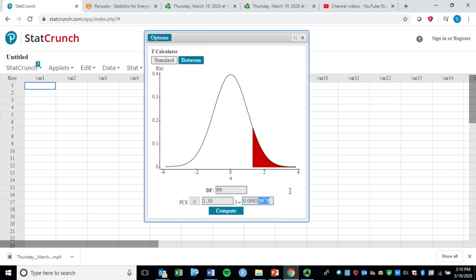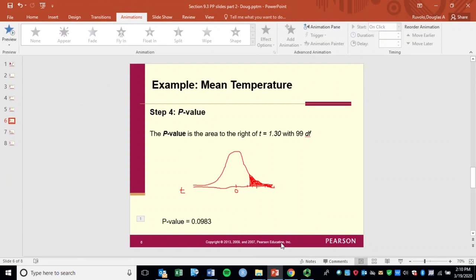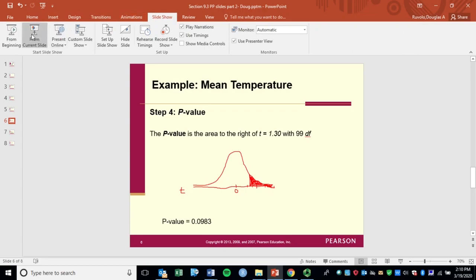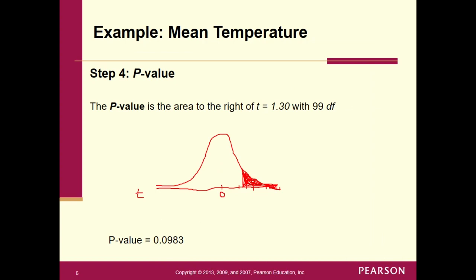Now, you don't have to take one minus anything. StatCrunch has already calculated it directly for you. You only have to do that with the tables, right? Tables don't know what you want. Well, StatCrunch does because you told it greater than. So we got .0983 for our p-value. And when we go to the next line here, there's our p-value of .0983. And that is this area right there. So that represents about 10%, roughly 10% of the area underneath that curve.